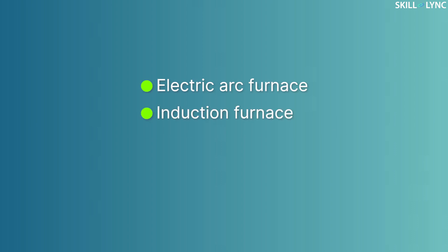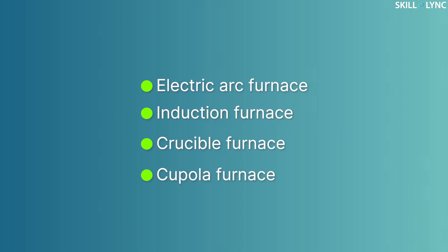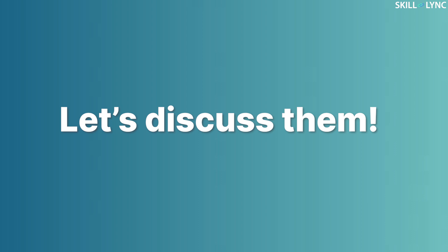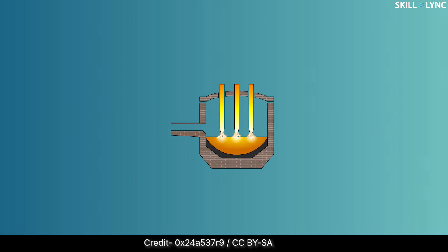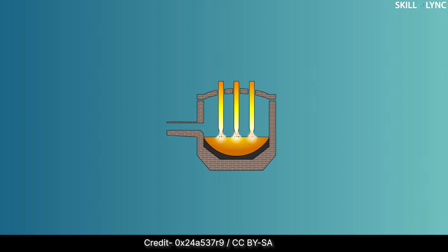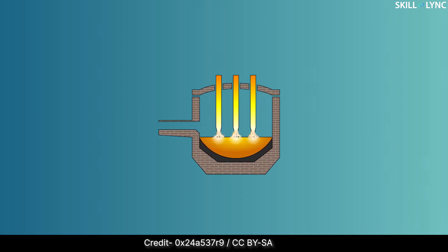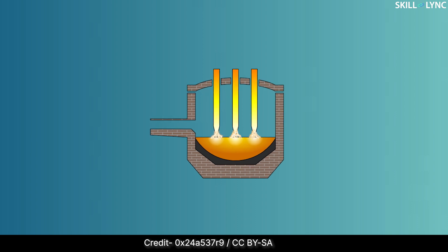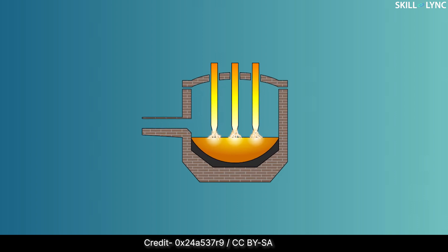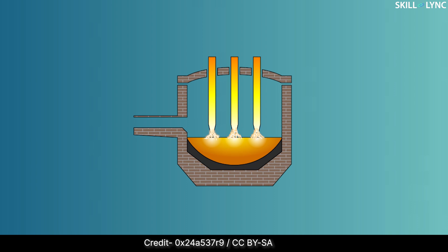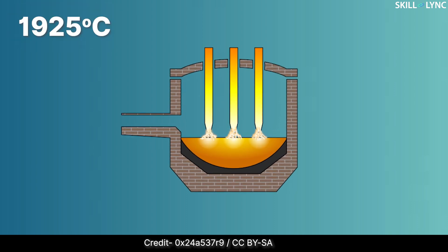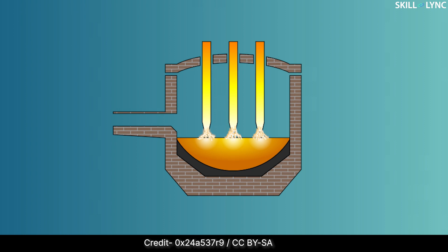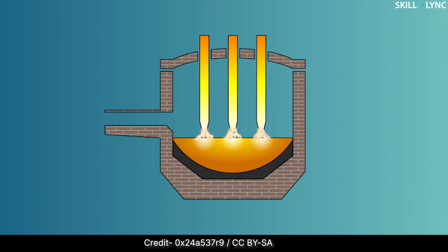The first melting furnace we will discuss is the electric arc furnace. In this furnace, the metal is melted with the help of an electric arc generated between the electrodes and the metal. Usually three electrodes made of graphite are used, and the temperature inside the furnace can reach as high as 1925 degrees Celsius.